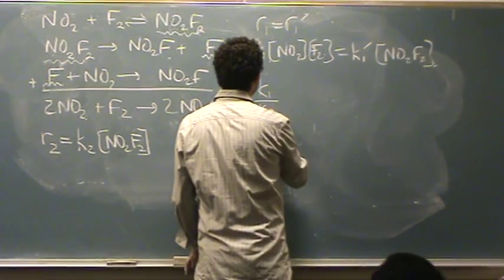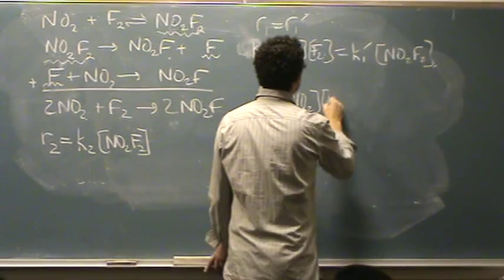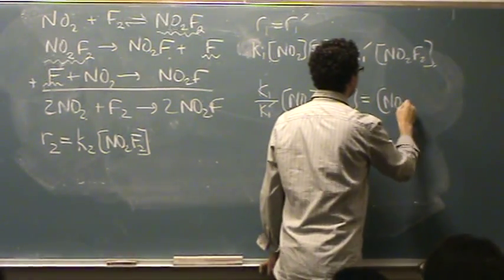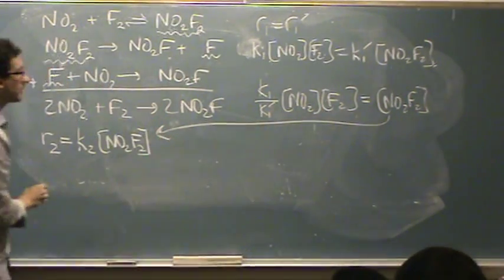K1 over K1 prime times NO2 times F2 equals NO2F2. This is going to go into my rate law.